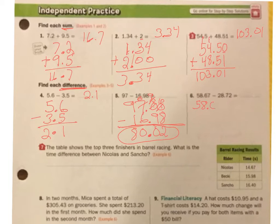Number 6: 58.67 minus 28.72. Line my decimals up. I drop my decimal down here. Now I just subtract. 7 minus 2 is 5. 6 minus 7 cannot do it. So I come over here. The 8 becomes a 7, 6 becomes a 16. 16 minus 7 is 9. 7 minus 8, can't do that. Take from the 5, it becomes a 4, and that 7 becomes a 17. 17 minus 8 is 9. 4 minus 2 is 2. So my answer is 29.95.